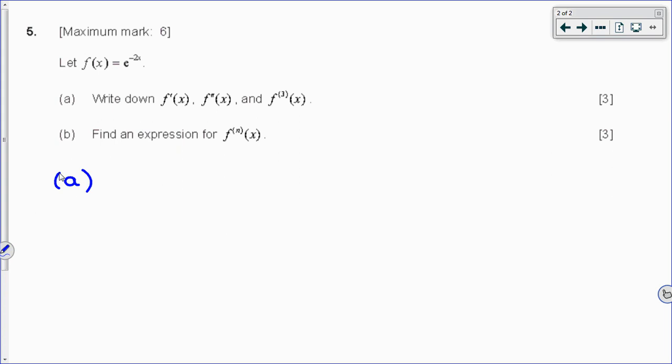So first we can find f'(x). We've got to get it right or all else will fail. If f(x) equals e^(-2x), and we have to get its derivative, the most common mistake that gets made is forgetting about the chain rule. So in the formula booklet, we can see that if the function is e^x, so f(x) equals e^x, then its derivative is still e^x.